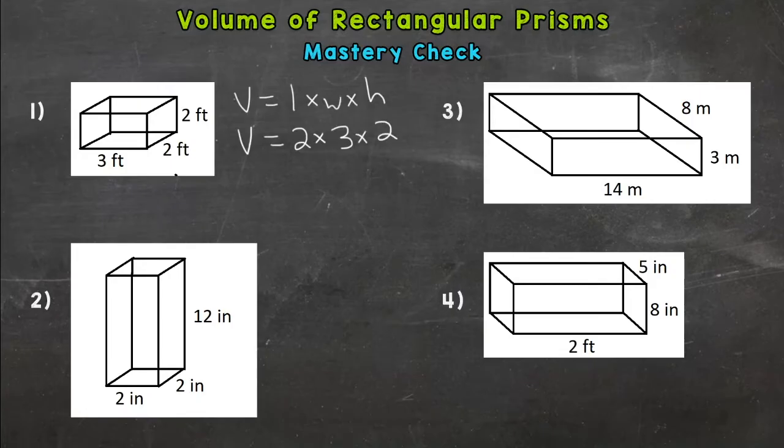Now if you considered the length to be this 3 here at the bottom and the 2 to be the width, that's fine. If those numbers are mixed up, you'll end up with the same answer. So for number one, we should have 12 cubic feet. Circle our answer.